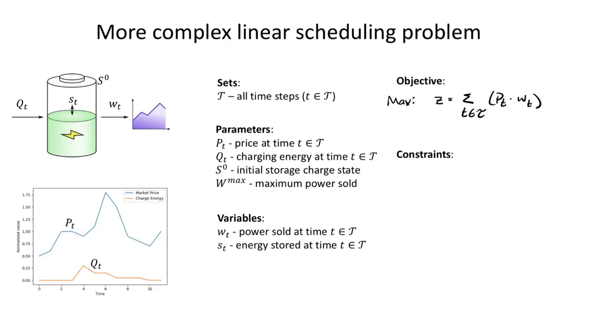So, for example, our first constraint here might say something about the amount of power that we can produce. We've already noted a parameter W max. It's the maximum power that you can sell. So that's sort of an instantaneous value. So we need to enforce that maximum power for every single time period.